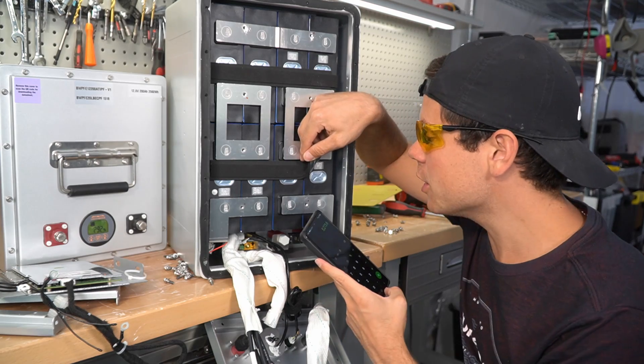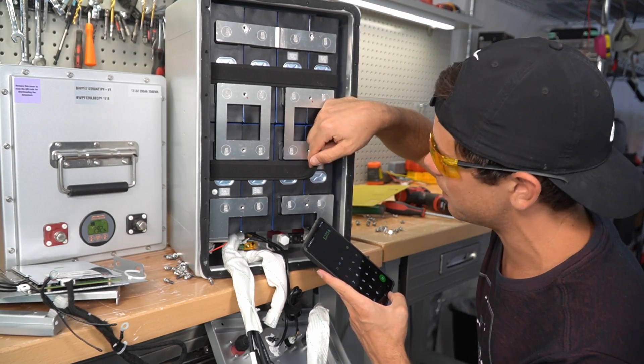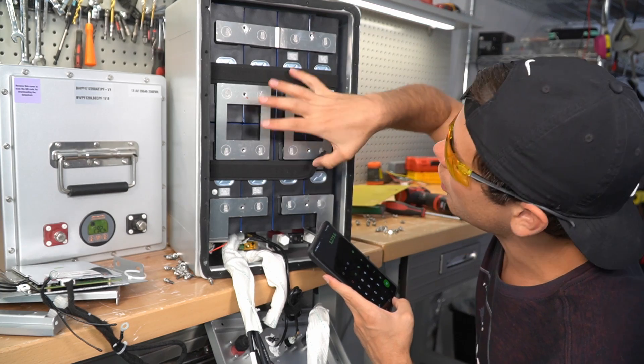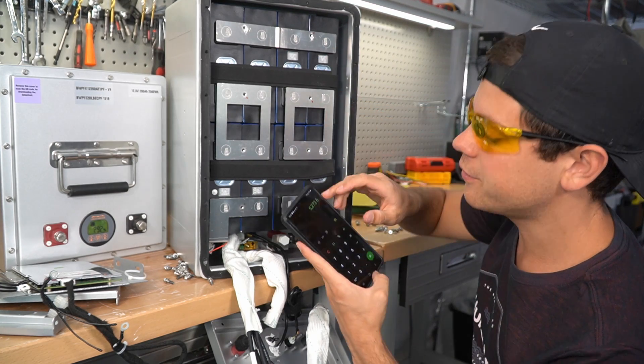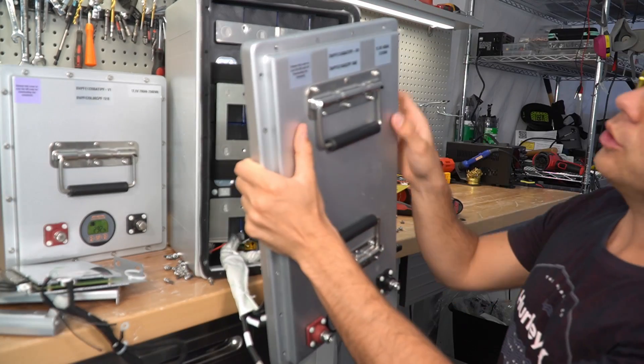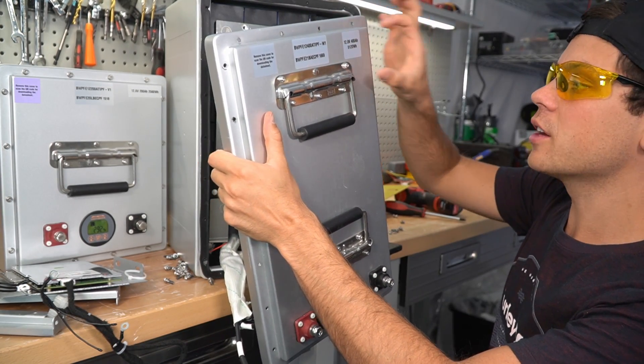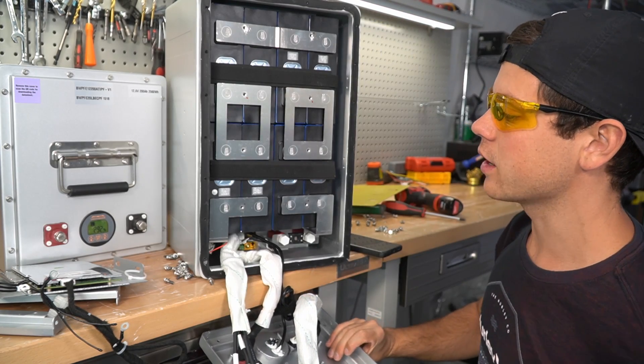And these cells are 206 amp hours and they look identical to what's in the SOK 206 amp hour. And if you do the math with all eight of these cells, you get 5,273.6 watt hours. But they only advertise 5,120 watt hours, which is very smart to do. So this should exceed its capacity rating.